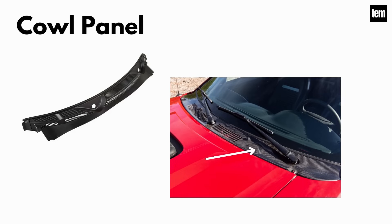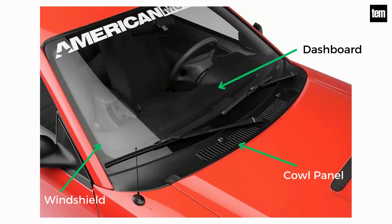Cowl panel. A cowl is the panel that covers the gap between the car's hood and windshield. It supports both the windshield and the dashboard, making sure no unwanted elements get into the windshield wiper system or the cabin filter area.